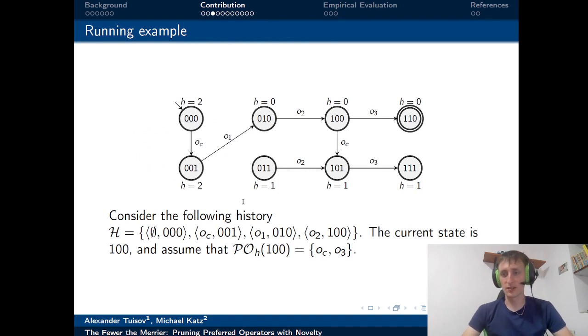So to better understand how exactly we prune the preferred operator set, please consider the following running example. What we have here is a transition graph of a problem that has three variables and domain for each variable is either 0 or 1. For example, state 001 that you see here is a state where the first and second variables have the values of 0 and the third variable has a value of 1.